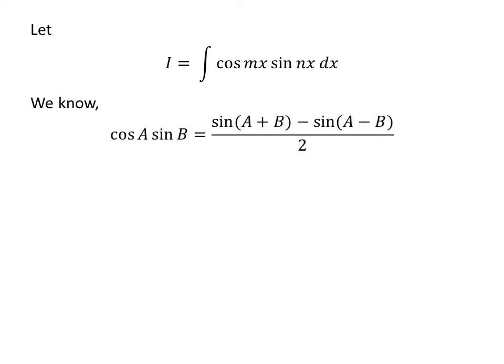We know the trigonometry identity: cosine of a times sine of b is equal to sine of a plus b minus sine of a minus b, upon 2. The video appearing in the upper right corner explains the proof of this trigonometry identity, and the link has also been given in the description section.